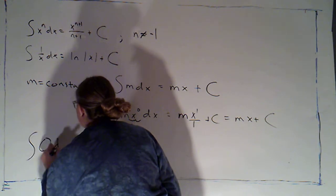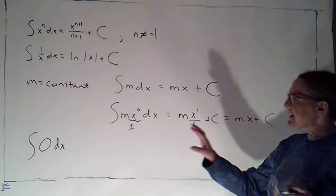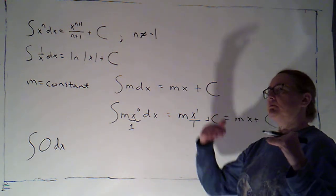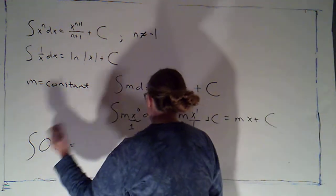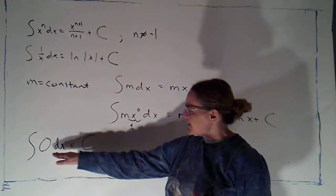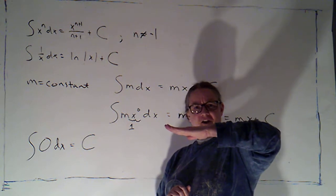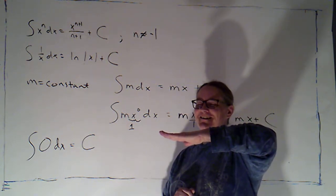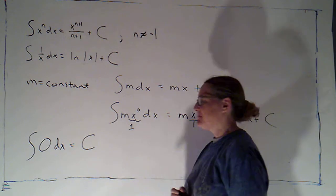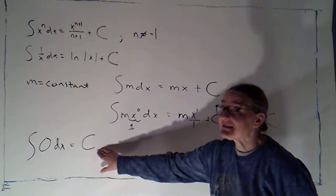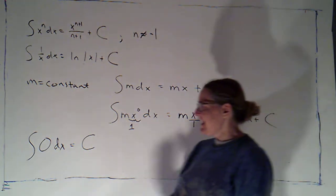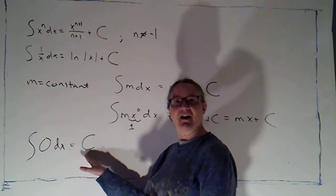Notice that rule applies even if my constant is 0. So if I integrate 0, I should get a line of slope 0, which would just be 0x plus c — in other words, a constant. Geometrically, what sorts of lines have a slope of 0? Horizontal lines, which are just constant functions. So if you're integrating 0, you do get something, because you always get that plus c. The sorts of things that have a slope of 0 are horizontal lines, which are constant functions.